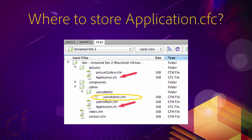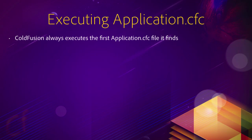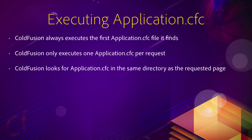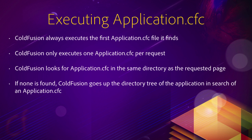Now to summarize all this, these are the rules when executing an application.cfc file. ColdFusion always executes the first application.cfc file that it finds. ColdFusion only executes one application.cfc per request if one is found. There is a way to have an application.cfc inherit the code written in another application.cfc, but that is an advanced topic not covered in this course. ColdFusion looks for an application.cfc in the same directory as the requested page — that's the default behavior. If found, it executes it. If not, ColdFusion goes up the directory tree in search of another application.cfc and executes the first one it finds.